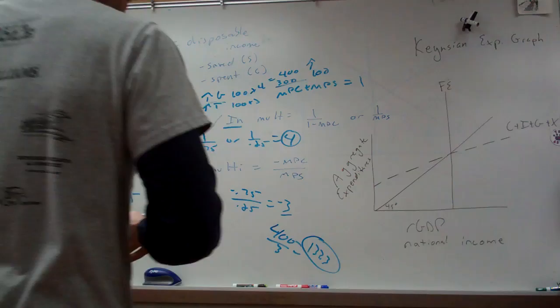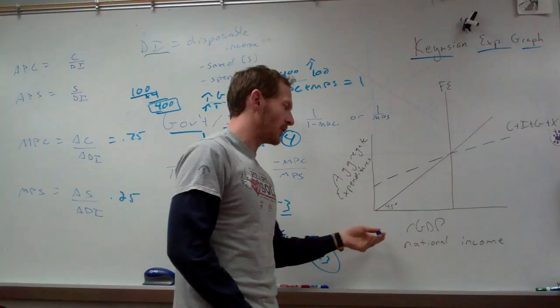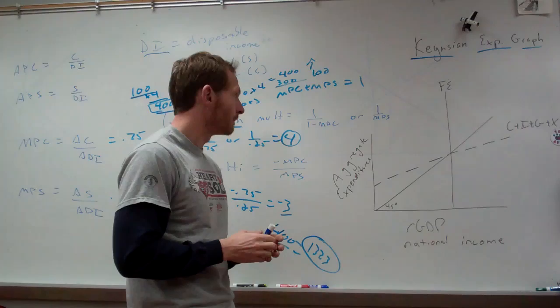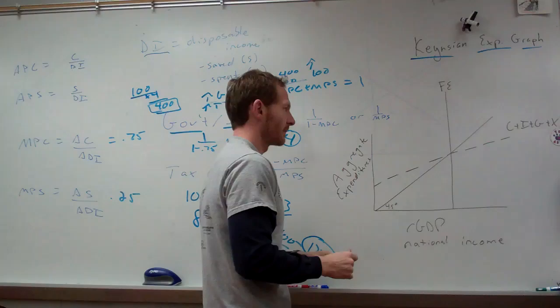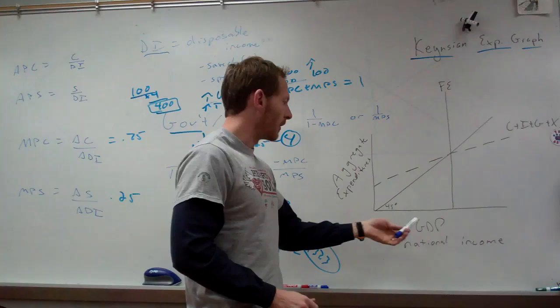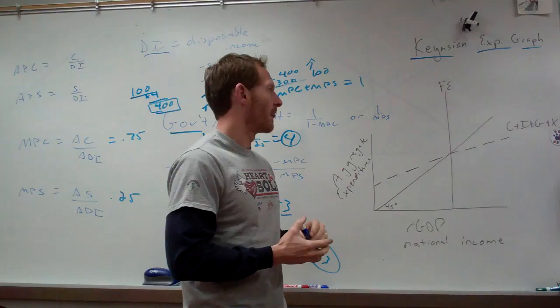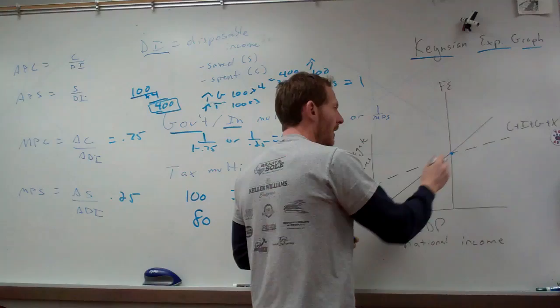Now I want to talk about the Keynesian expenditures model. This model was developed by John Maynard Keynes and doesn't involve prices. On the X-axis you have real GDP — some textbooks say national income or net income — and on the Y-axis you have aggregate expenditures, the expenditures of the entire economy. The first thing you do after drawing your axes is draw a 45-degree line. This represents where expenditures hits GDP. If our aggregate expenditures — consumer plus investment plus government plus net exports — meets the 45-degree line right at full employment output, then we're at full employment equilibrium. That's where we want to be.